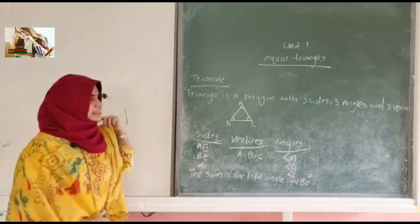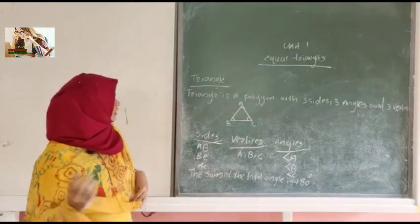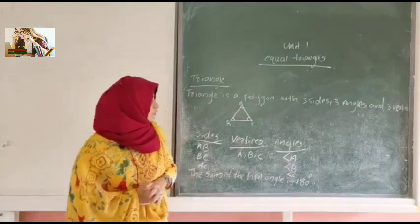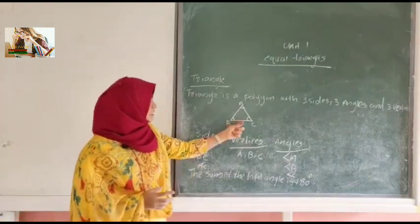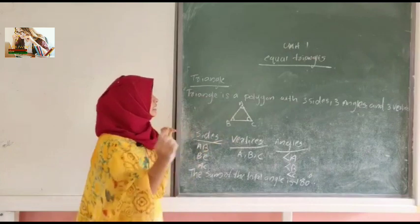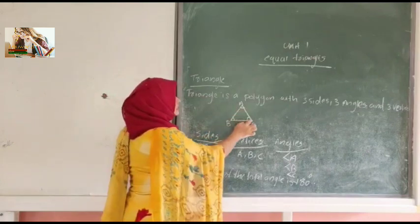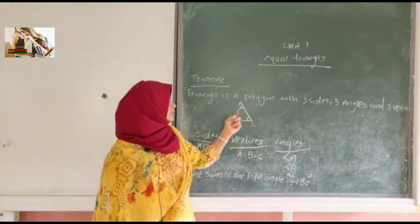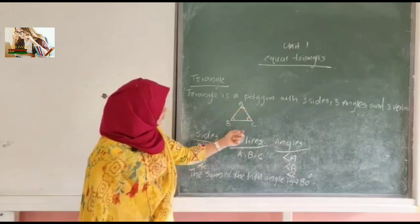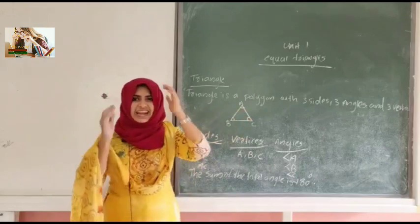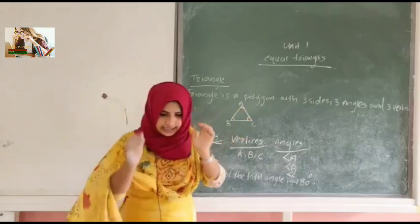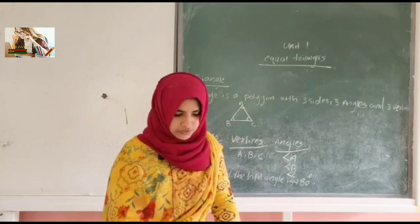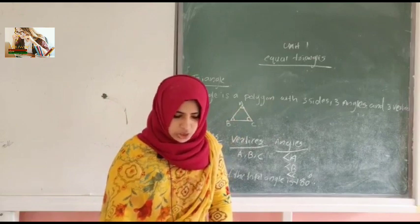These are the basic ideas of a triangle. A triangle is a polygon with three sides, three vertices, and three angles, and the sum of the total angles is 180 degrees. These are the basic ideas of a triangle.